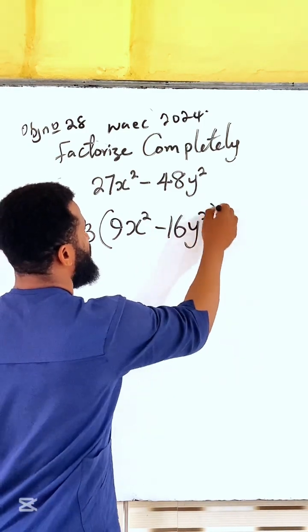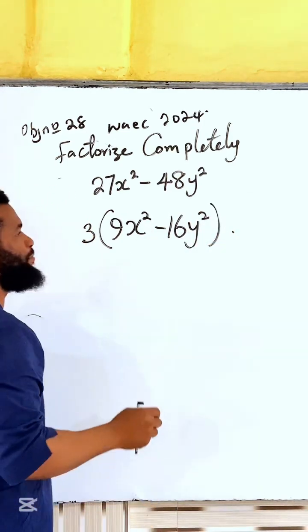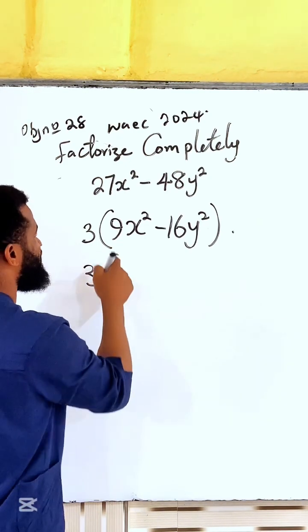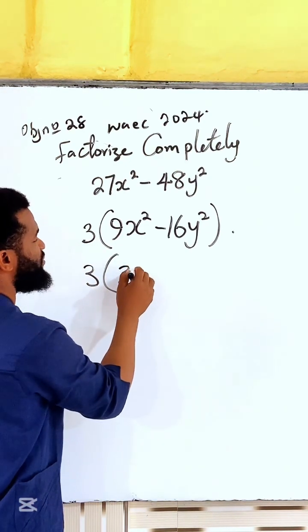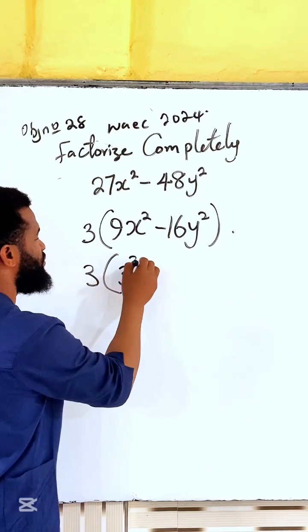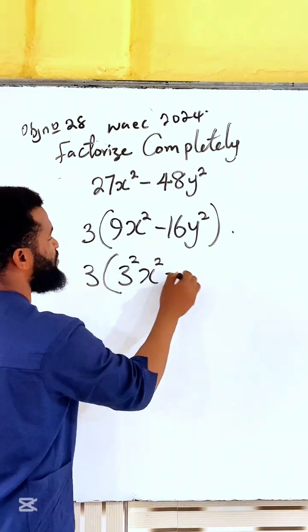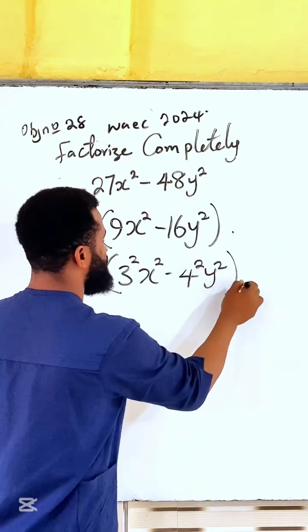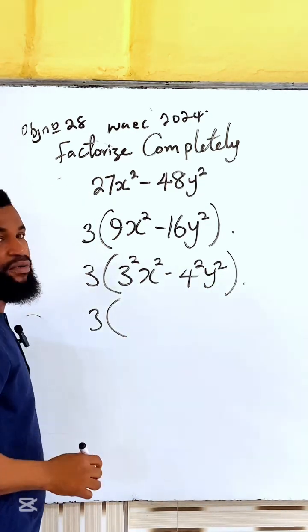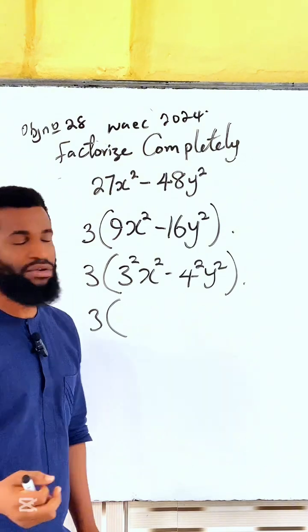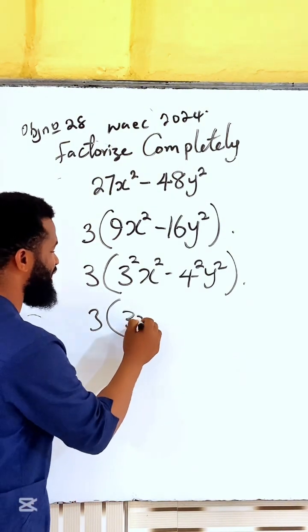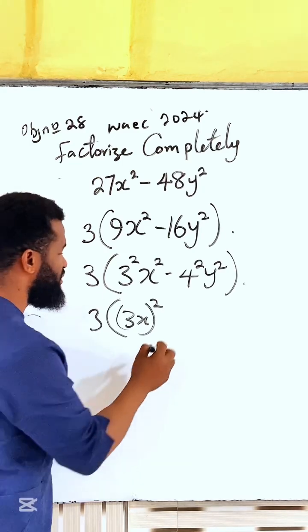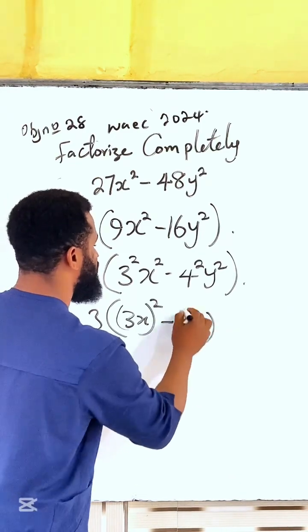Now I'm having difference of two squares. This is 3 times [9 is 3² and x², minus 16 is 4² and y²]. I'm going to apply the power law. In the power law, this is (3x)² minus (4y)².